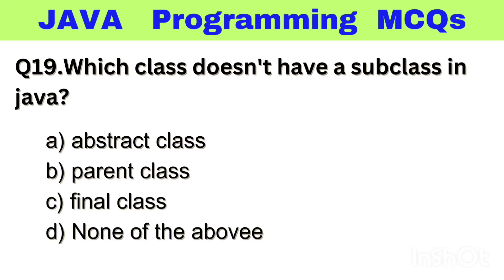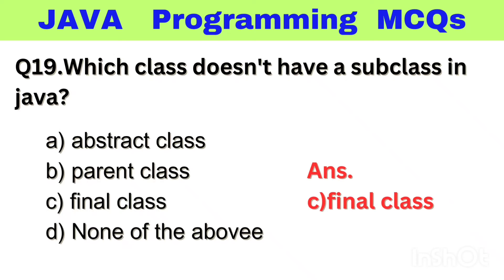Question number 19. Which class does not have a subclass in Java? Option A: Abstract class, B: Parent class, C: Final class, D: None of the above. The right answer is option C, Final class.